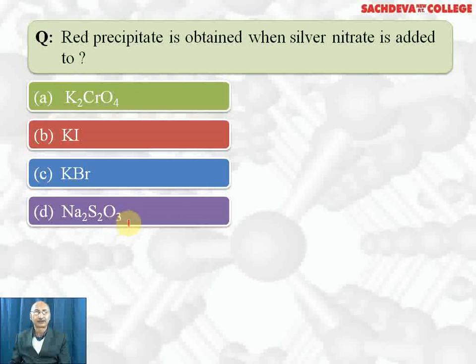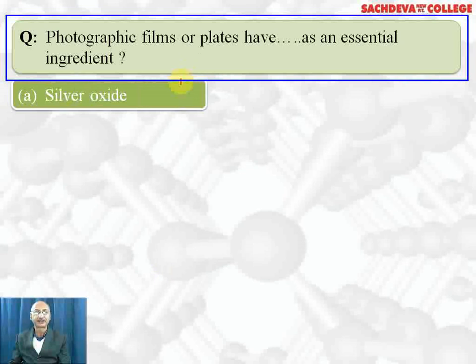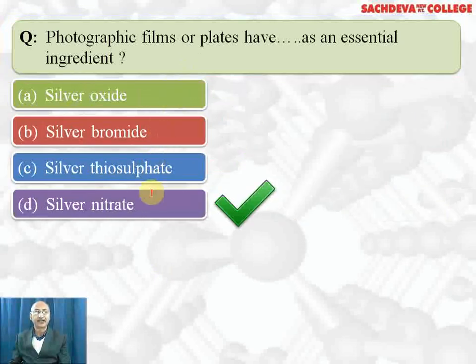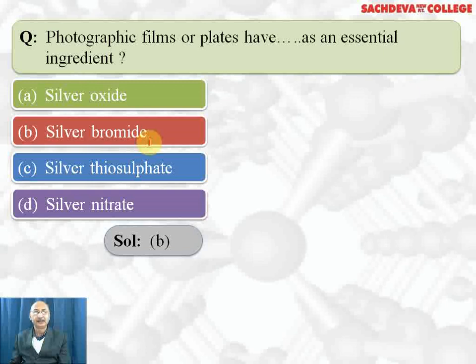Photographic film or plates have silver bromide as an essential ingredient. Correct answer is silver bromide. Photographic films are coated with silver bromide and gelatin acts as protective colloid. Sodium thiosulfate is used as a fixer in photography.